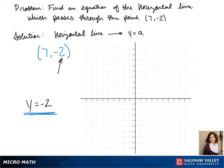To see our graph, we can plot our point of 7, negative 2 and the y-intercept of negative 2, and that gives us our horizontal line.